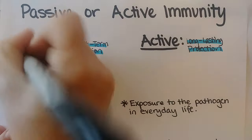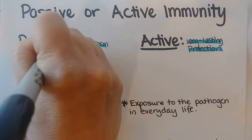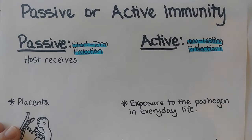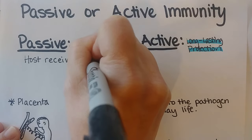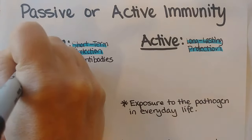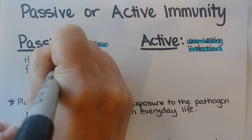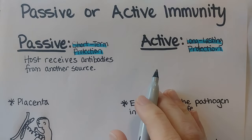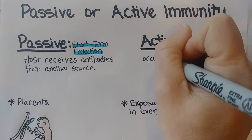For passive immunity, the host will receive antibodies. Usually in nature, this is going to be a baby receiving antibodies from its mother — so the host receives antibodies from another source. In active immunity, this will occur when the host's own body makes the antibodies.